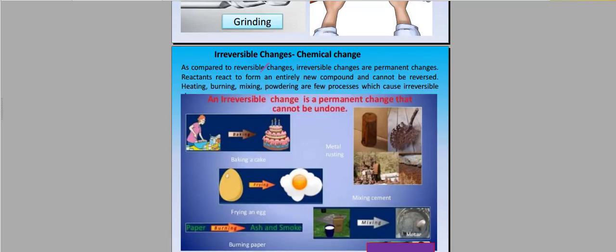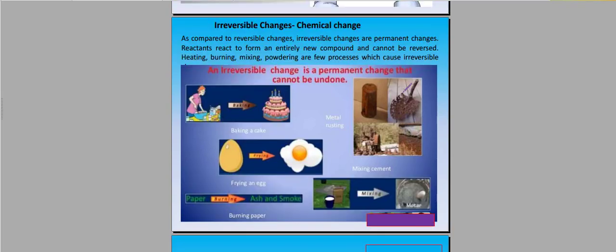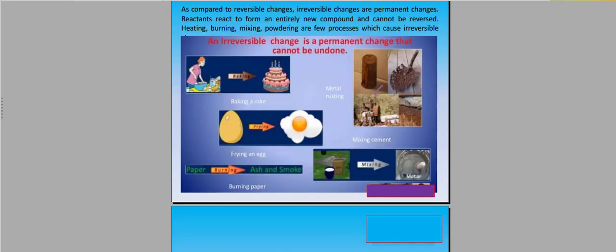Irreversible changes, chemical changes. As compared to reversible changes, irreversible changes are permanent changes. Reactants react to form an entirely new compound and cannot be reversed. Heating, burning, mixing, powdering are few processes which are irreversible. Like if I have made a cake through a process that took 2 hours, I cannot change the same material back into powder form and cream form. That will not be possible. Irreversible change is a permanent change that cannot be undone.